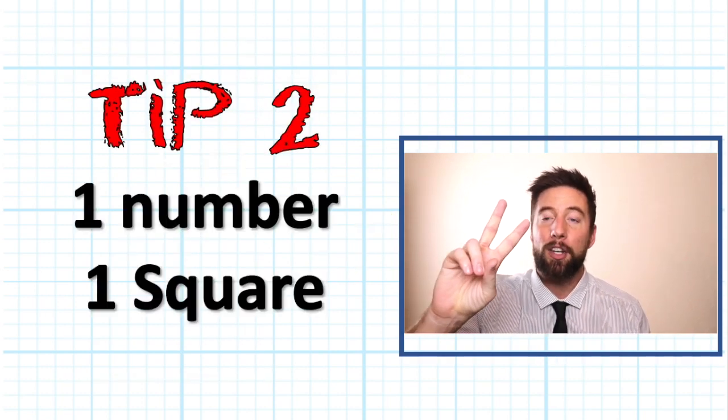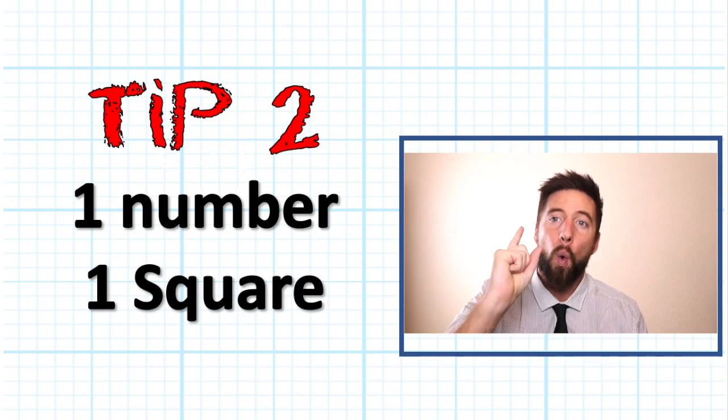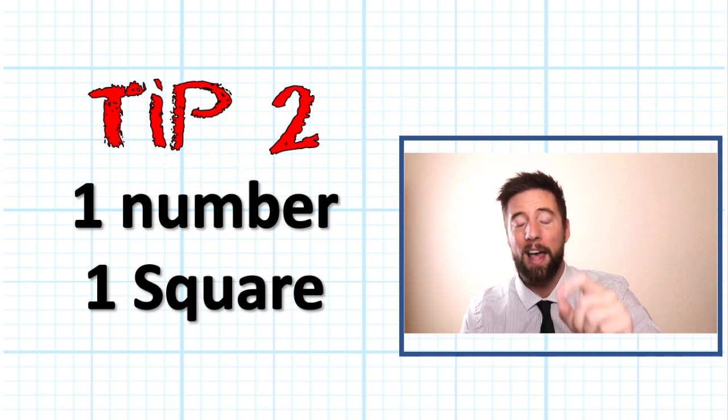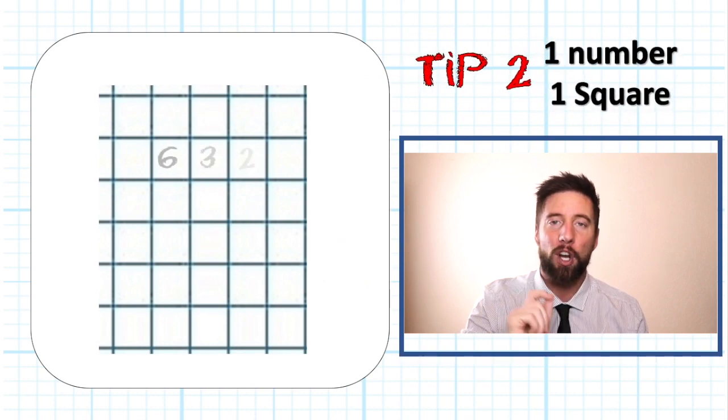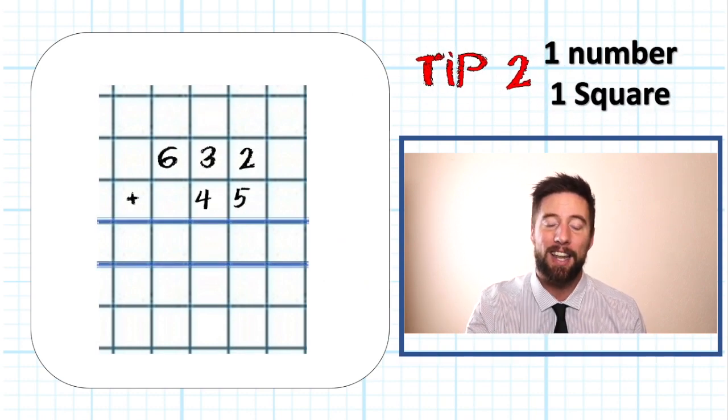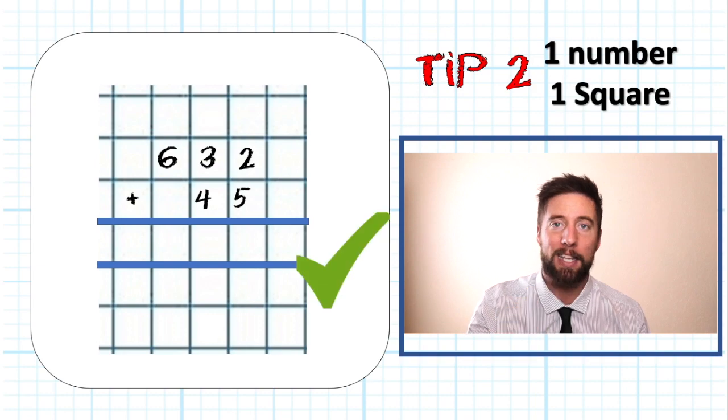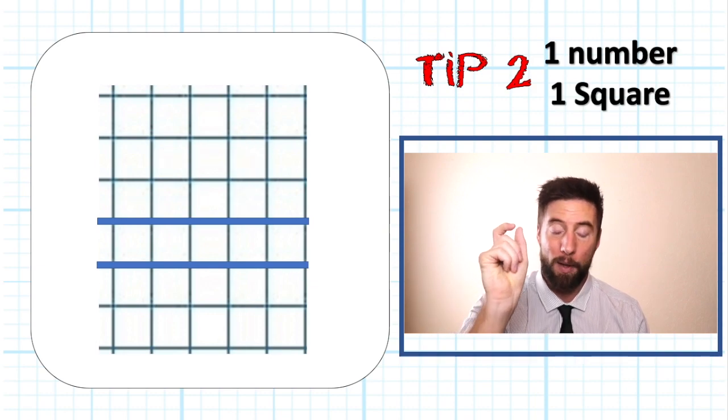Tip number two, and if you are at school you will hear this all the time, one number, one square. The trick to maths is being organized, being neat and organized. The more organized you are, the less likely you are to make those small mistakes. So put one number in one box.